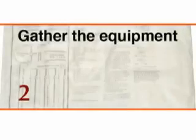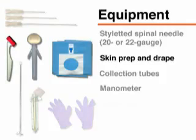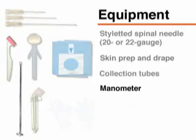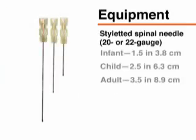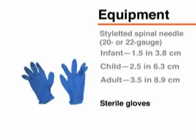Before performing the lumbar puncture, you will need a commercially available tray containing the necessary supplies: a spinal needle with a stylet, equipment for skin preparation, drapes, collection tubes, and in some cases a manometer. Typically, a 20 to 22 gauge needle is used, with the length ranging from 1.5 inches (3.8 cm) for infants, to 2.5 inches (6.3 cm) for children, and 3.5 inches (8.9 cm) for adults. You will also need sterile gloves.